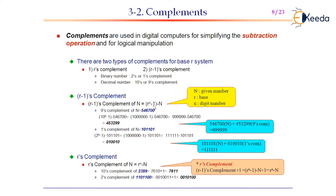When you want to calculate r's complement of a number, you simply take the r-1's complement and add 1 to it, which gives you the r's complement. So for binary, 1's complement plus 1 gives the 2's complement.